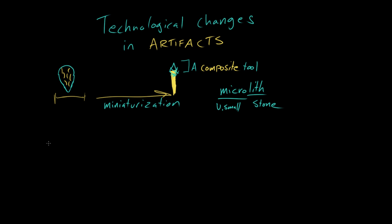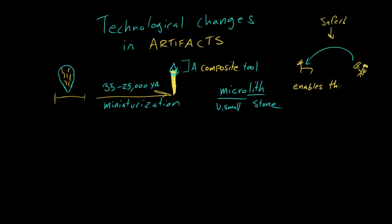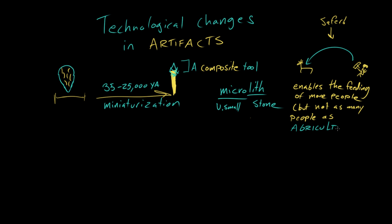We start to see microliths — dating is not super precise, but probably somewhere around 35 to 25,000 years ago. Now you have a small stone point attached to a stick: you can make a spear you can throw at an animal without being right next to it. You can make arrows using bows and arrows to reach from a farther distance. You don't have to go up and bop the ibex on the head — it's considerably safer to attack your prey from a distance. This miniaturization of tools makes hunting less dangerous, enables you to bring in more game, and enables you to feed more people, though not as many as agriculture would.